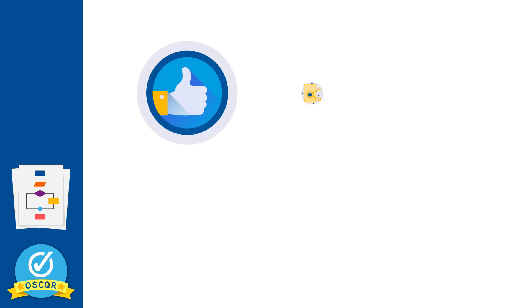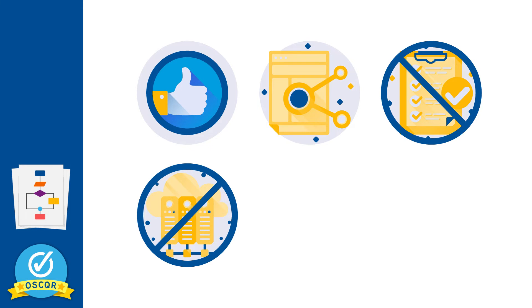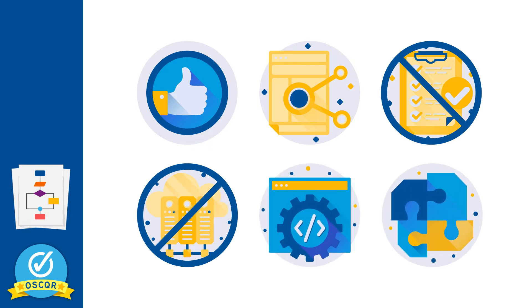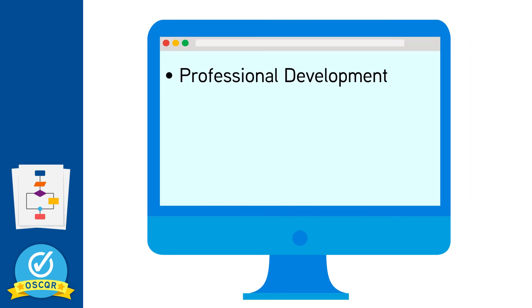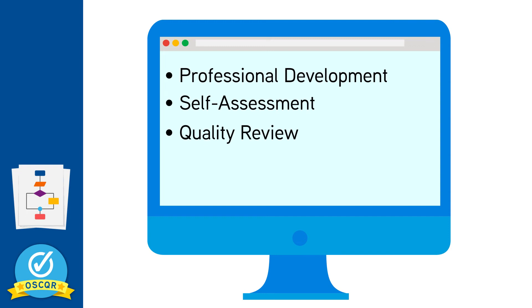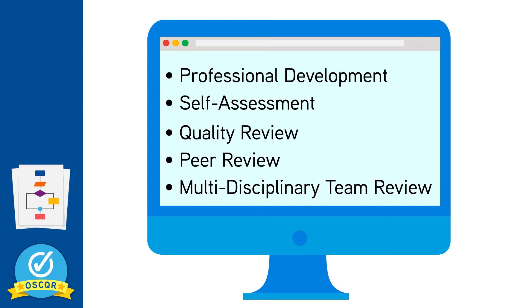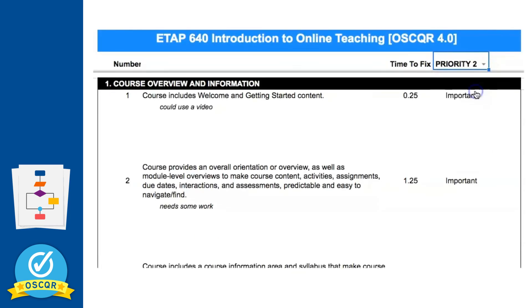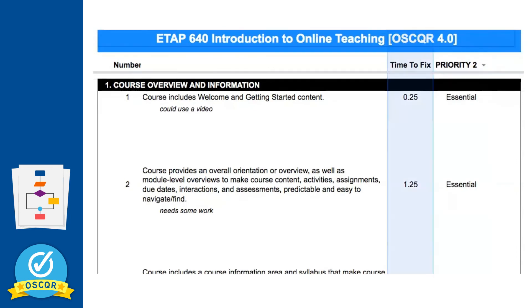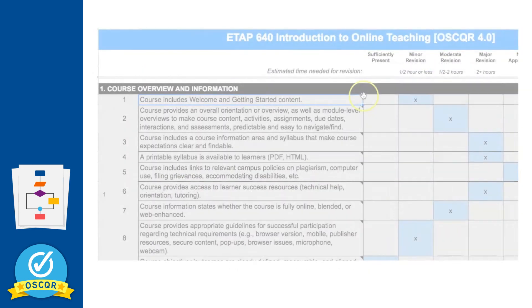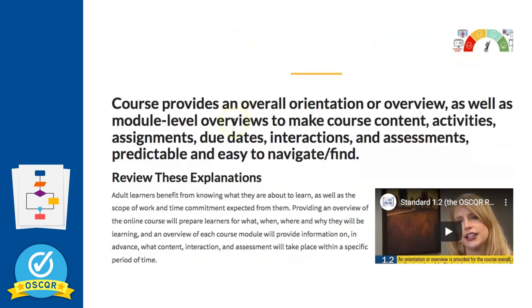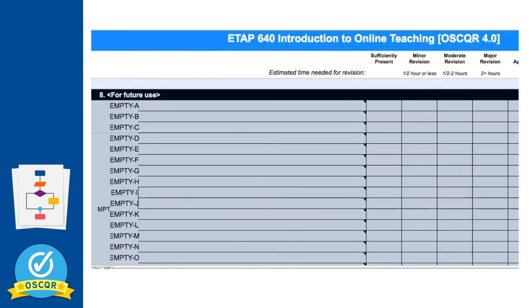The rubric is easy to use, flexible, non-evaluative, requires no storage space, can be customized, and can be implemented in a variety of ways: as part of an online faculty development and professional development process, as an online faculty self-assessment, as part of an online course quality review process by online instructional designers, as a faculty peer review process, or in a multidisciplinary collaborative team review model. The rubric also produces an action plan, allows for prioritization of standards, estimates the amount of time to make improvements, offers suggestions and examples for improvements, and accommodates modification and addition of standards.